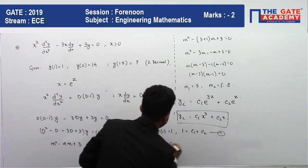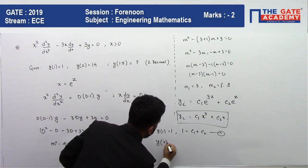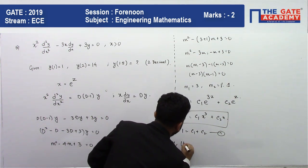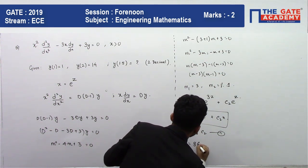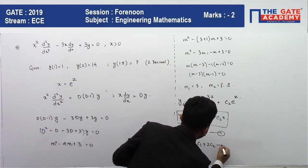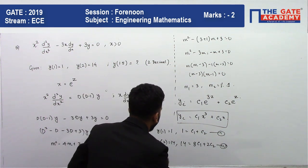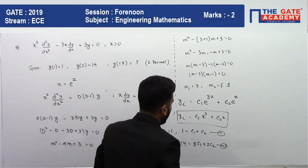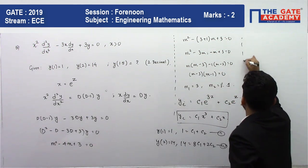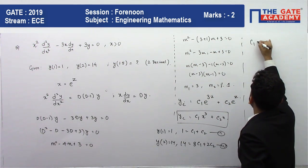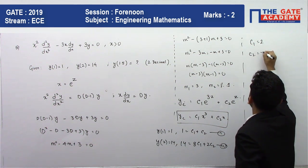Now you need to find the values of c₁ and c₂. Conditions are given: y(1) = 1, so 1 = c₁ + c₂, this is the first equation. And y(2) = 14, so 14 = 8c₁ + 2c₂. We need to solve these two equations.